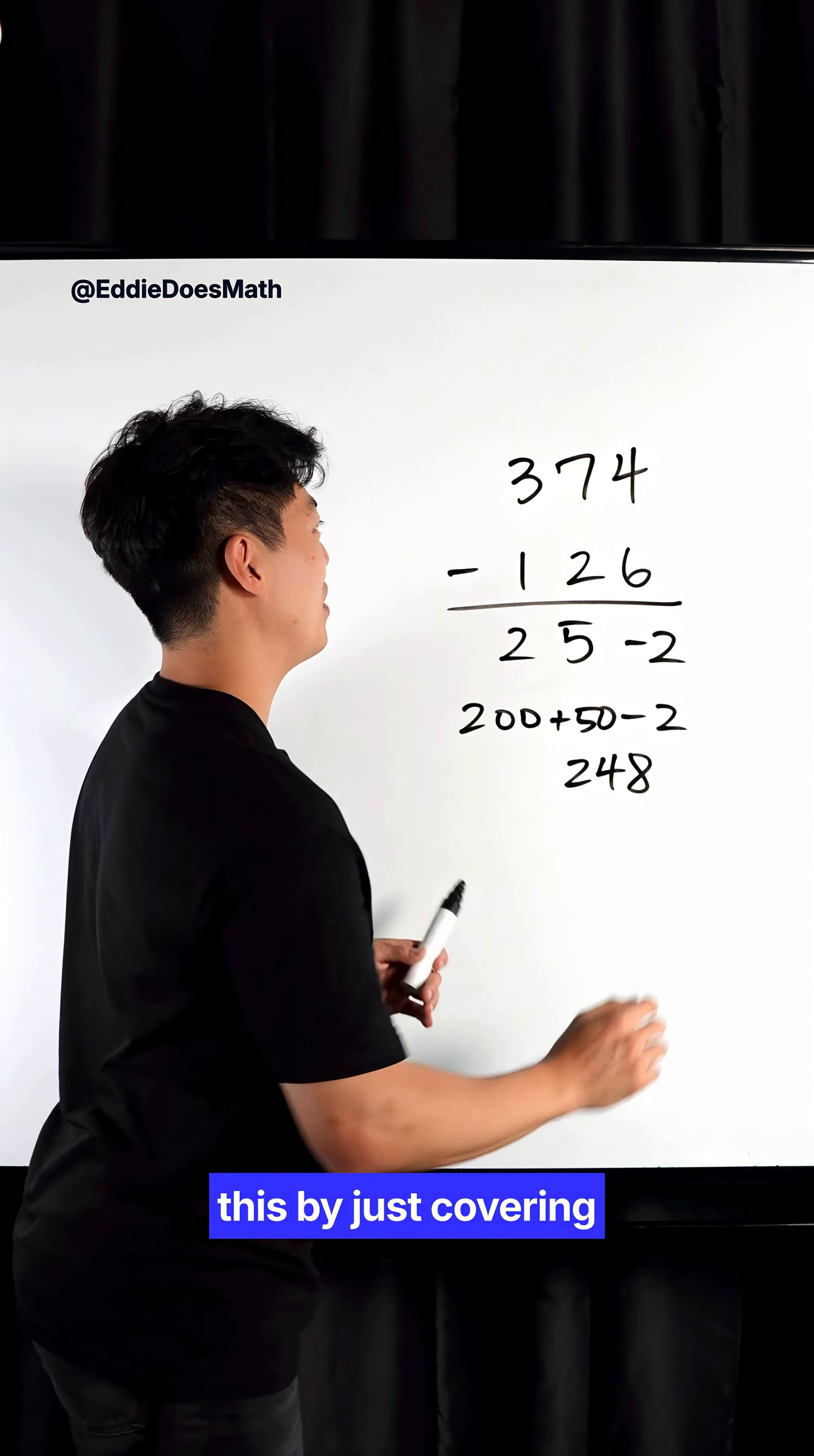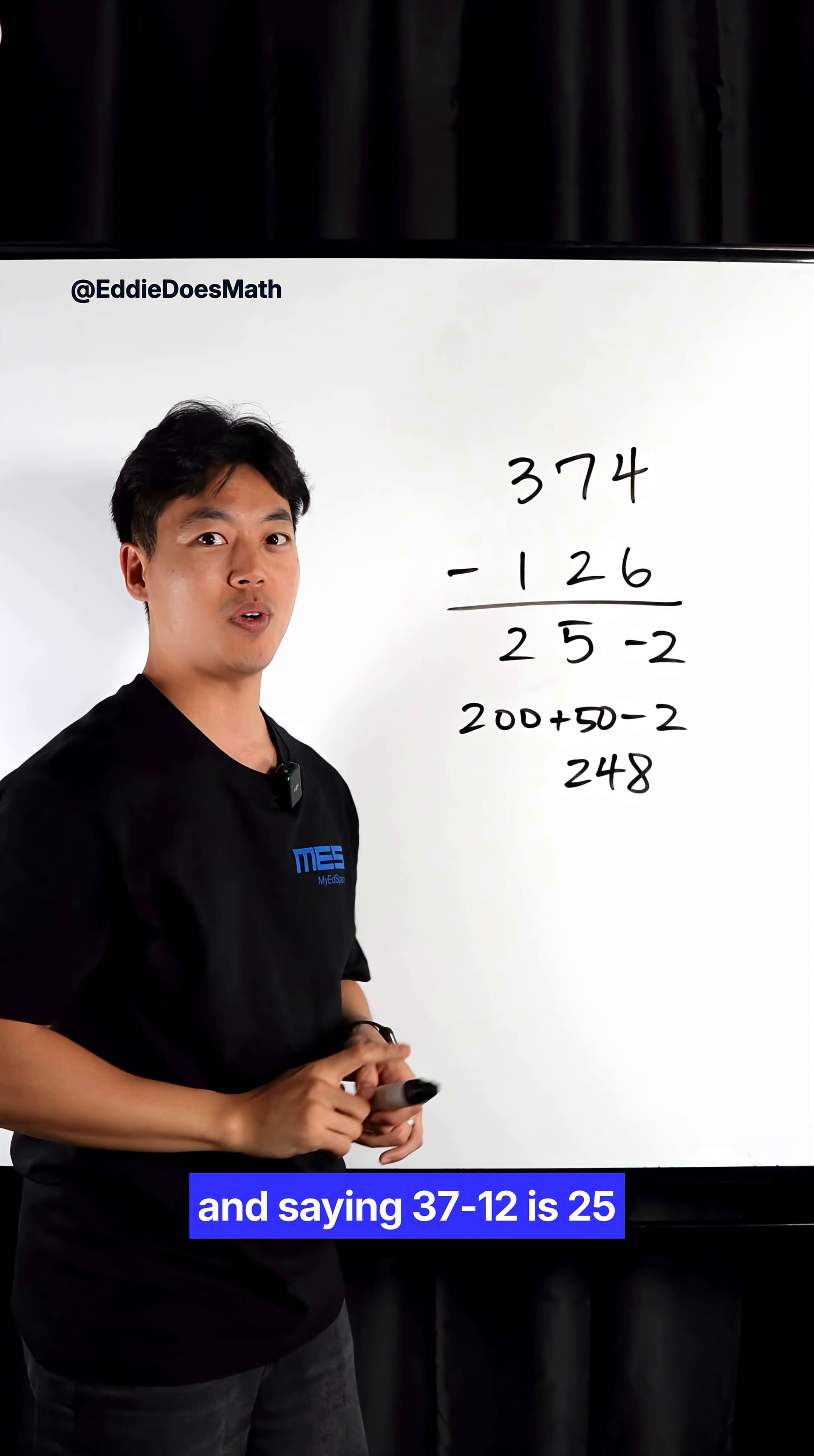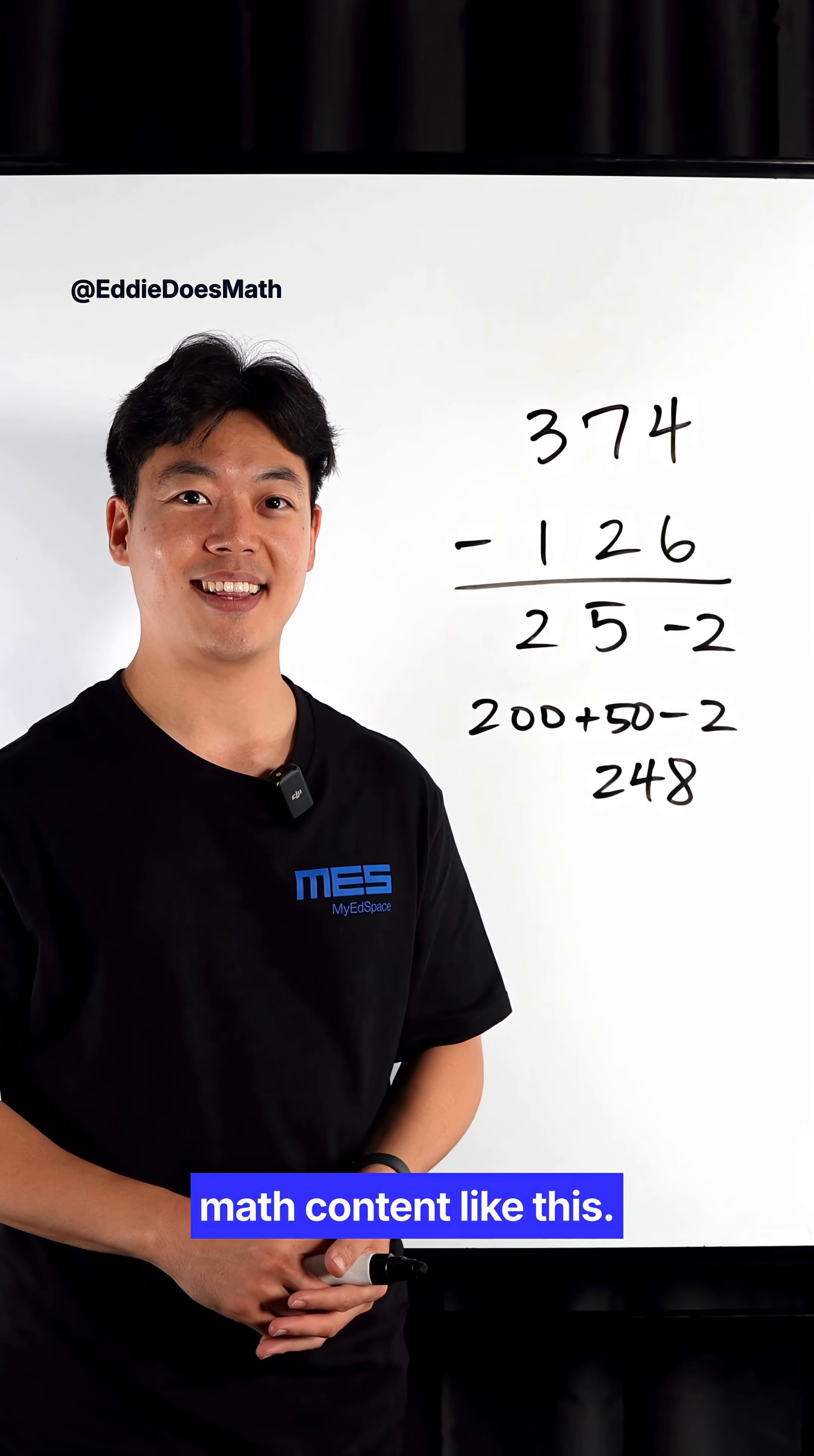Now you can also do this by just covering the ones digit and saying 37 minus 12 is 25 and call that 250. If you found this cool, follow me for more math content like this.